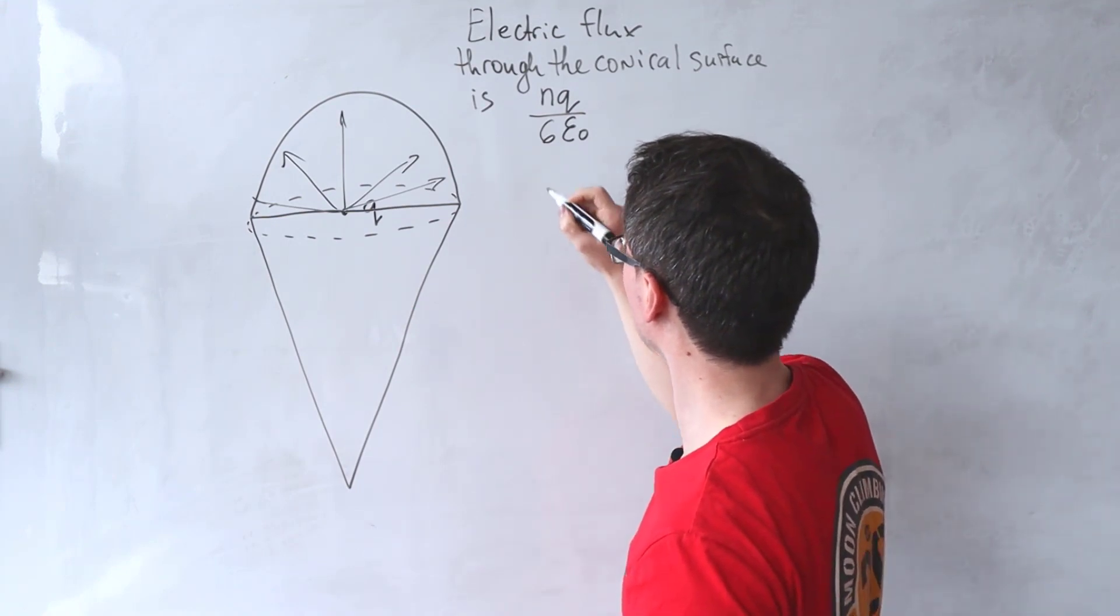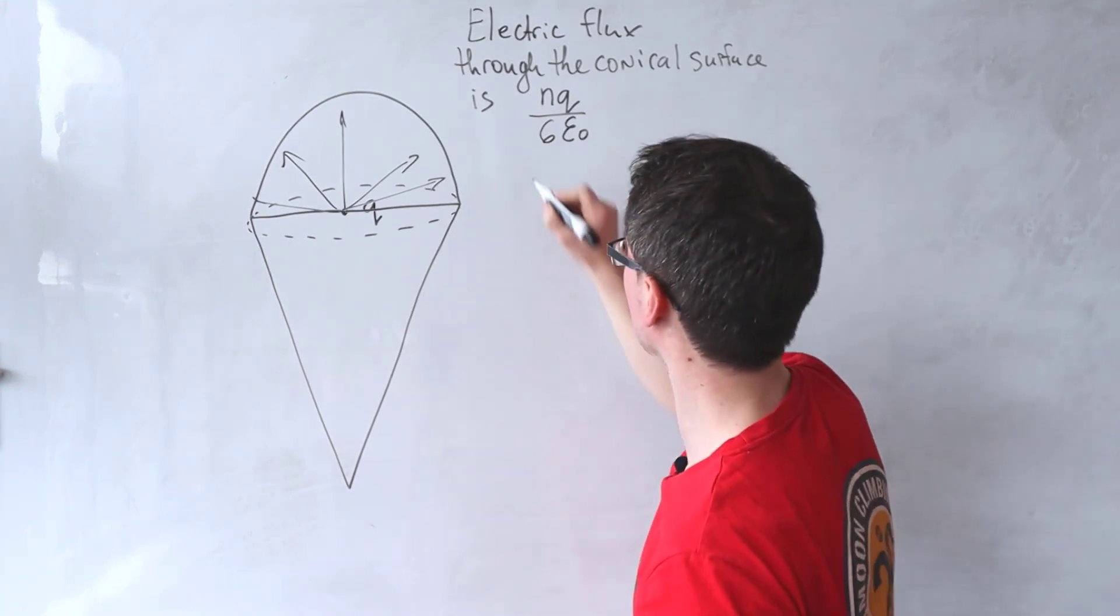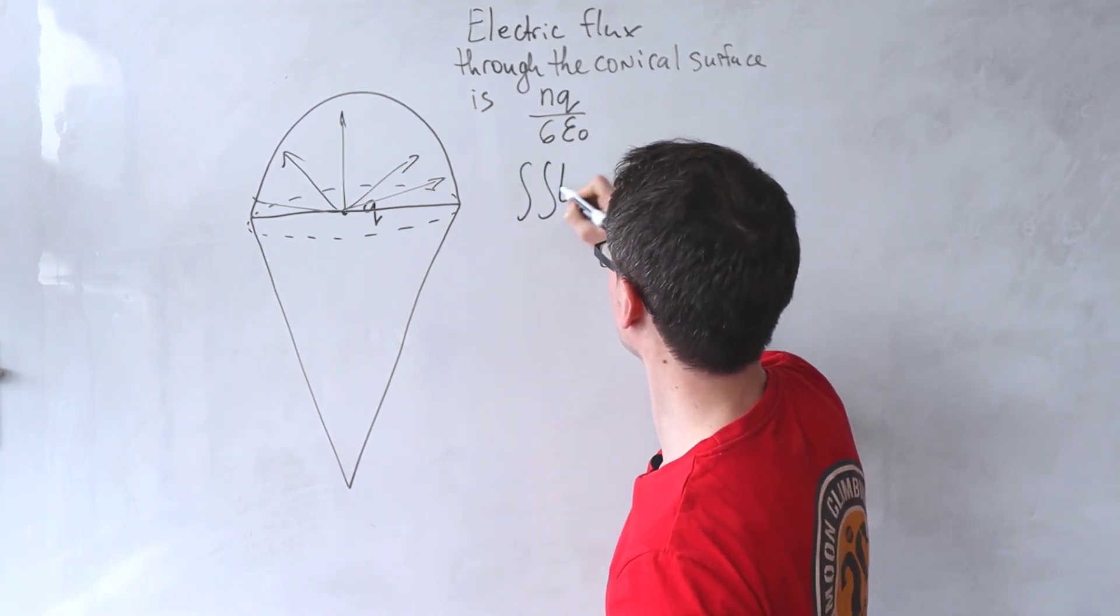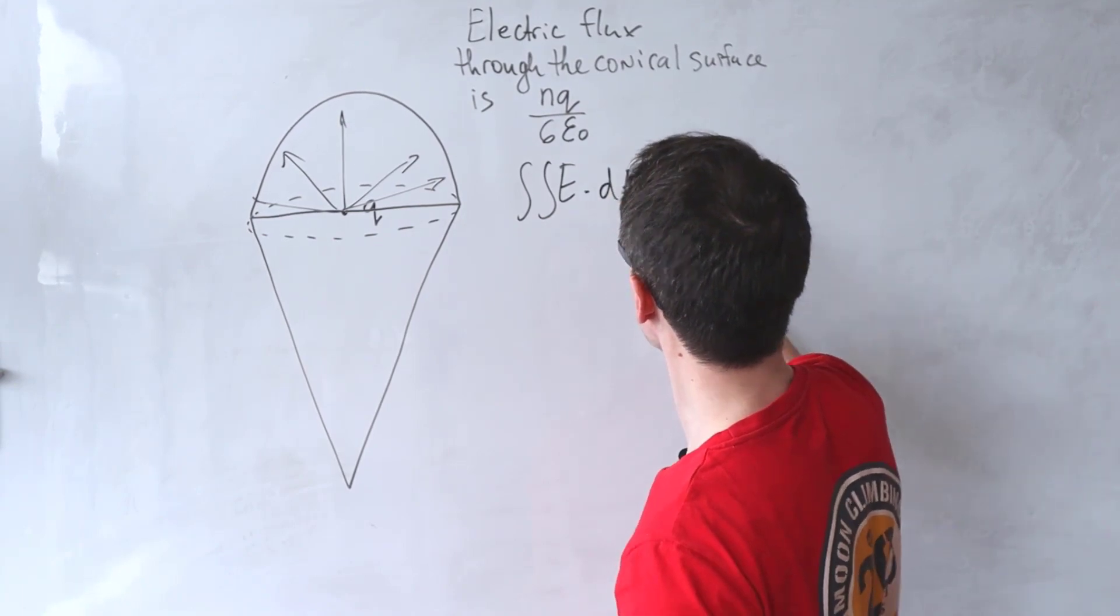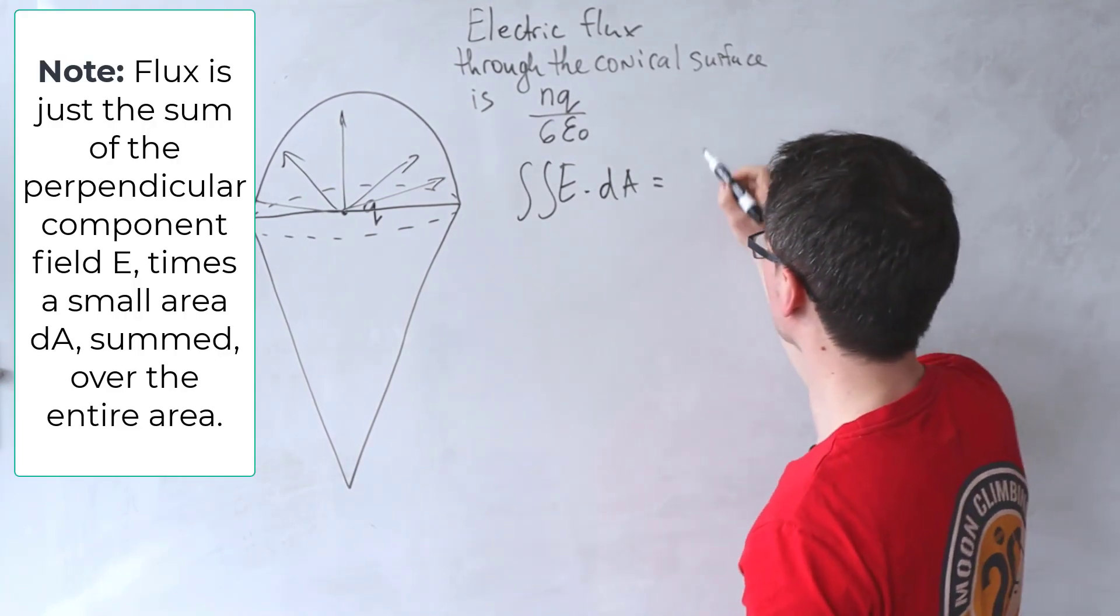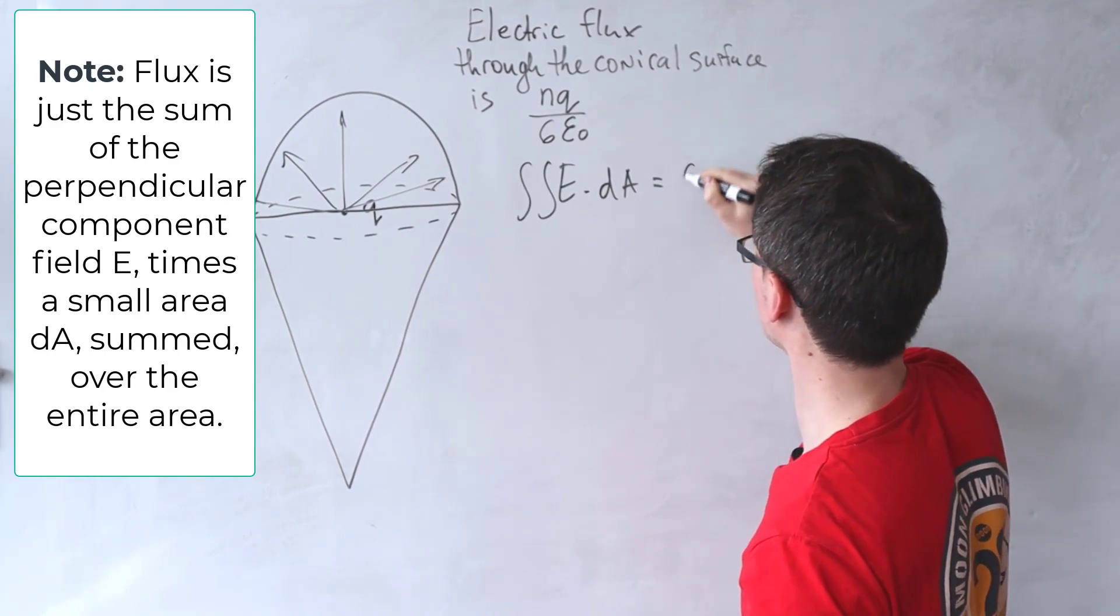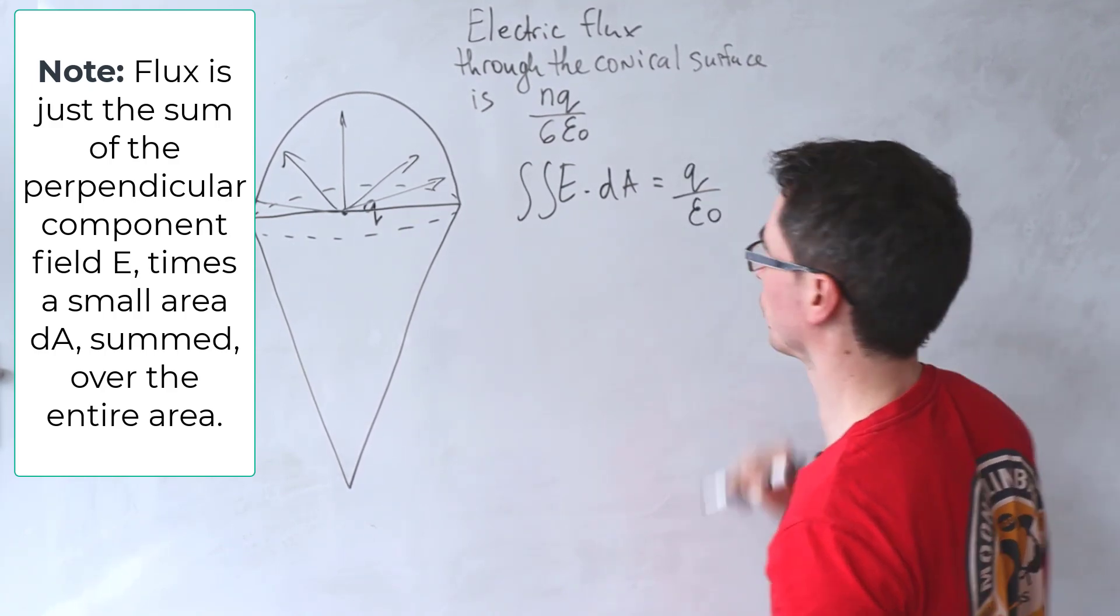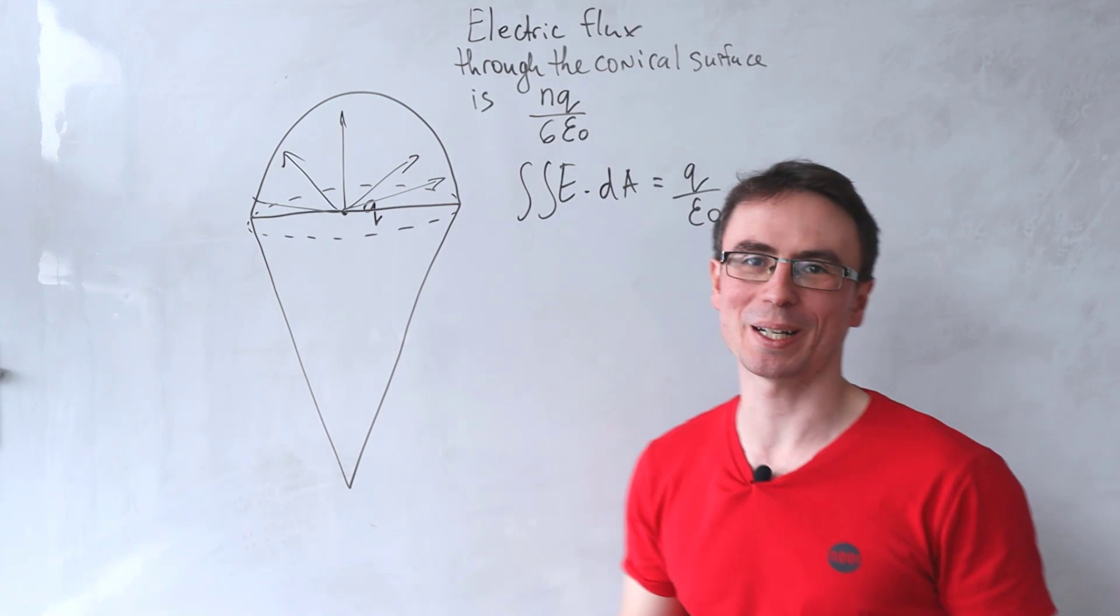Gauss's law says that the total electrical flux, integral E dot dA, is equal to the total charge Q. In this case that's just Q divided by epsilon naught. And this is where the symmetry comes in.